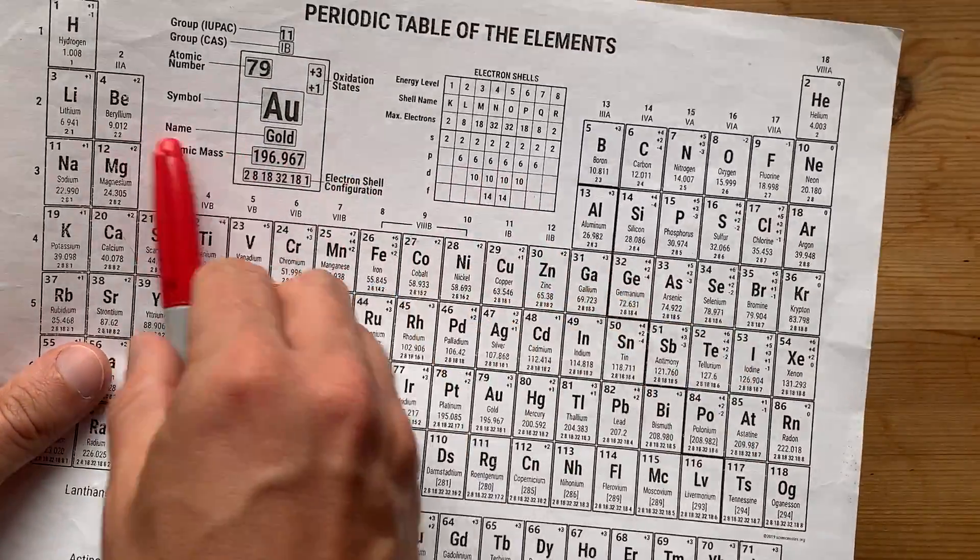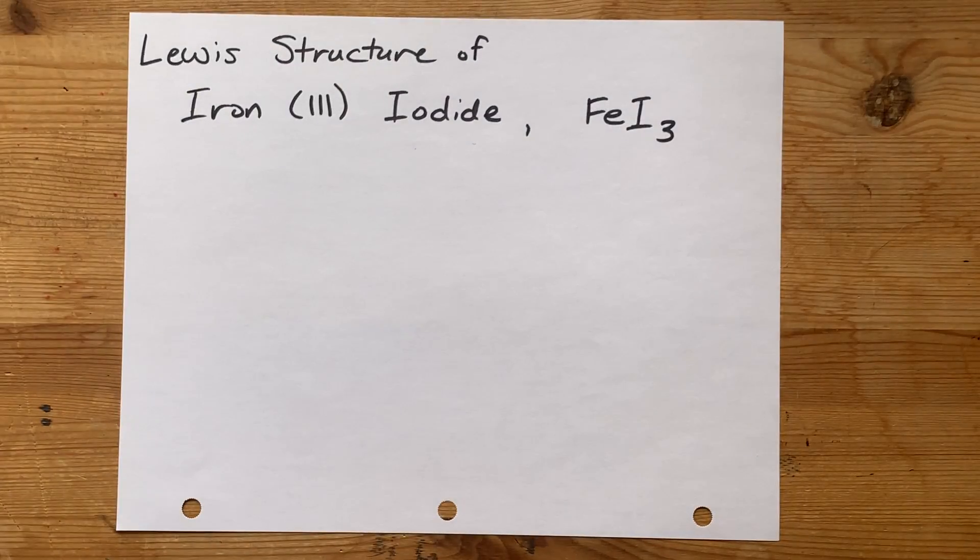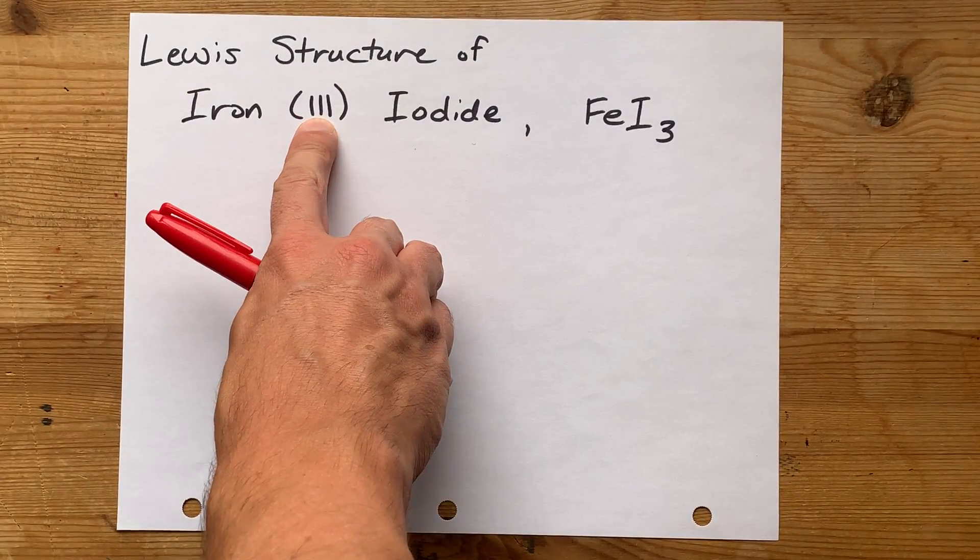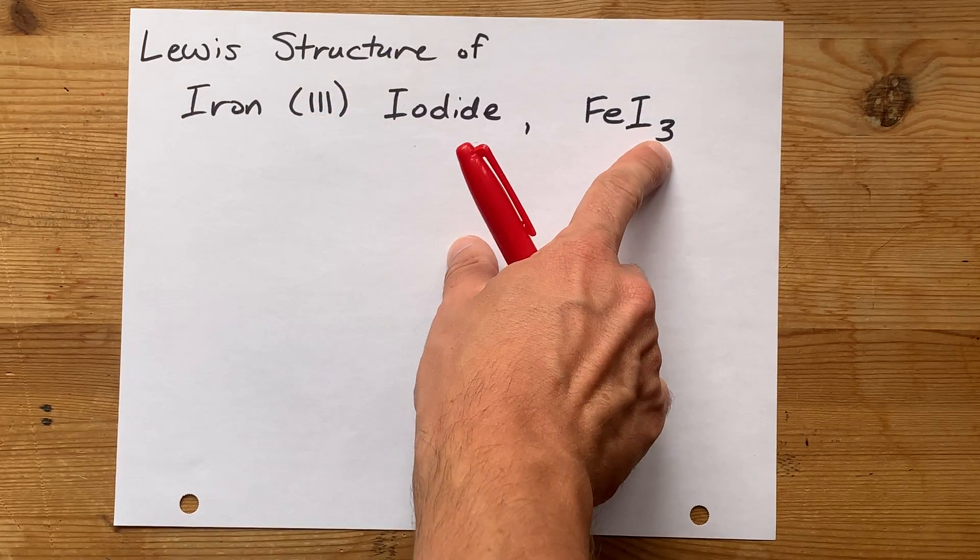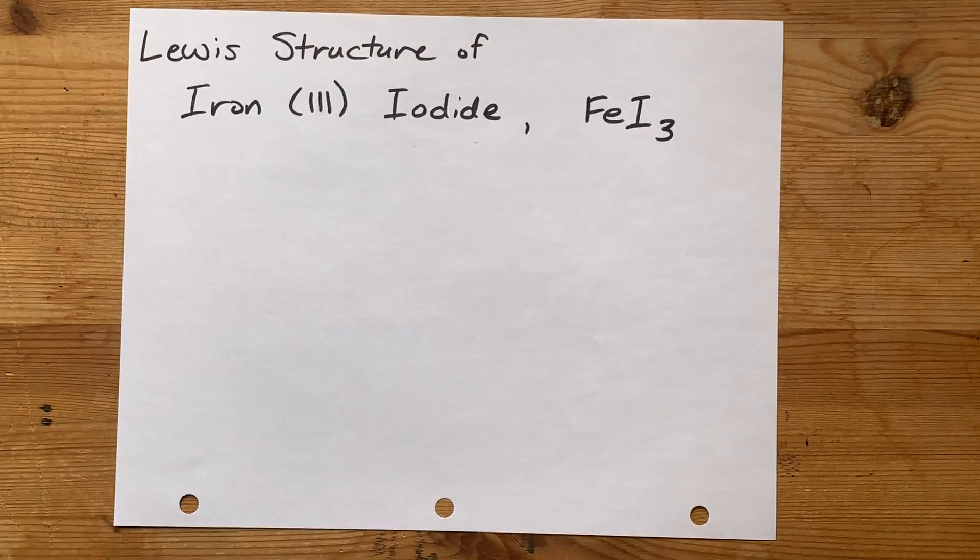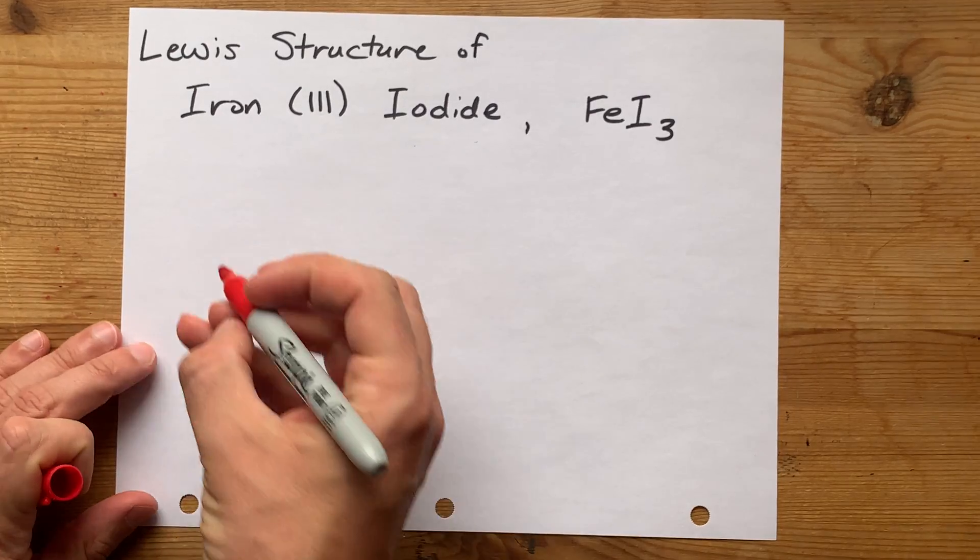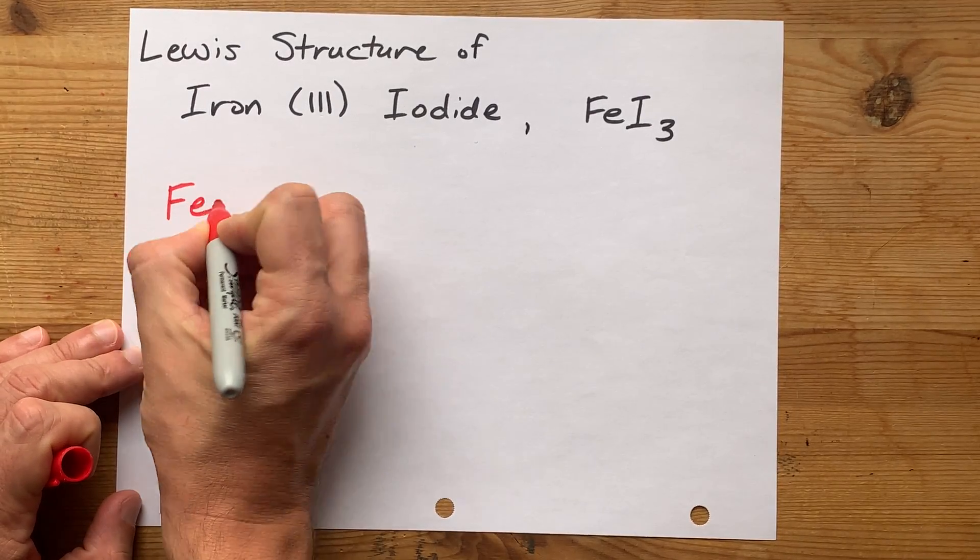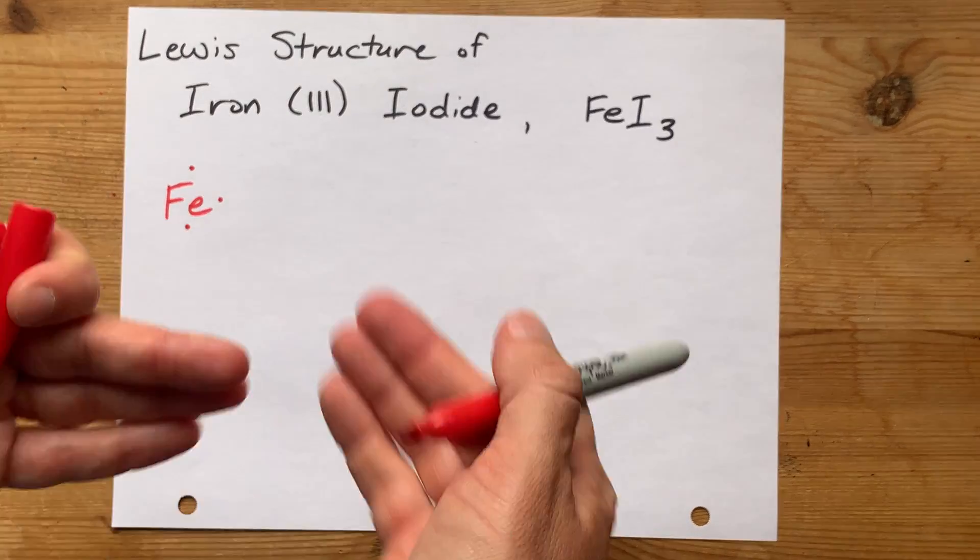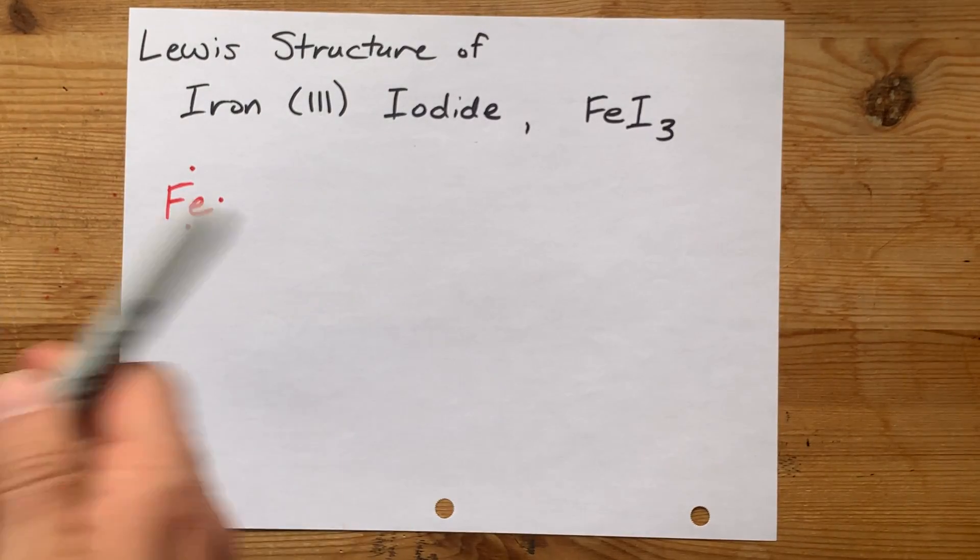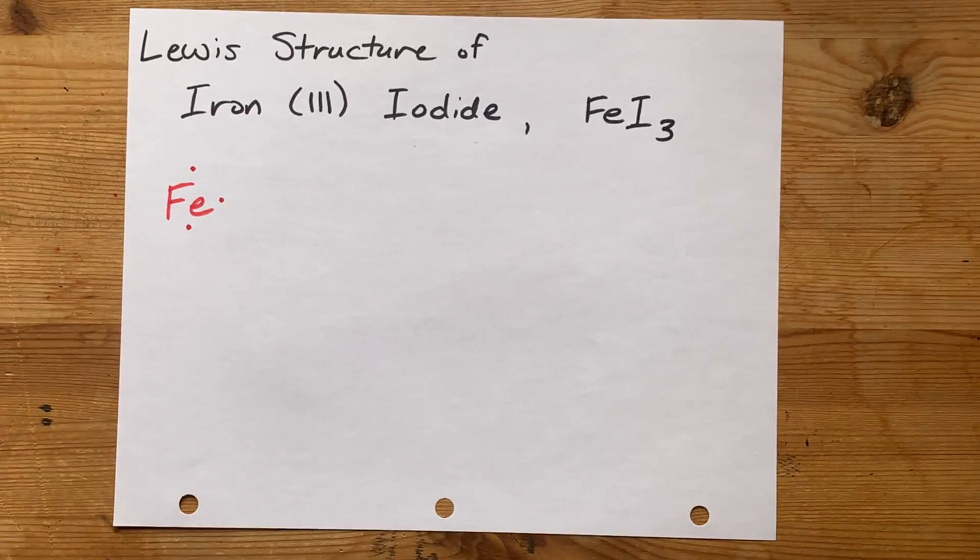Iron is a metal from the transition metal block of the periodic table. We're going to give it 3 valence electrons because in the name and in the formula, it's clear that iron has a charge of plus 3. Strategically, this means we're going to give it 3 valence electrons at the beginning of our Lewis structure drawing, just so that we can do the accounting for the electrons.